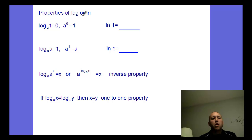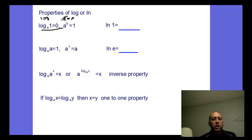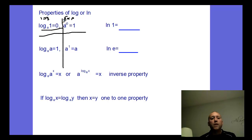Properties of logs and natural logs: log base a of one is zero — this is a property you have to know. If you don't see it in log form, write it in exponent form. A to the zero is one — anything to the zero power is one. In log form: log base a of one equals zero, no matter what the base is. So the natural log of one equals log base e of one, which is still zero.